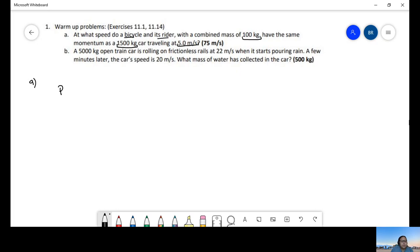P momentum equals mass times velocity. Let's find the momentum of the car. P car equals mass car times velocity car. This is equal to 1,500 kilograms times 5 meters per second. We have 7,500 kilogram meters per second.